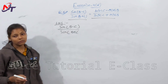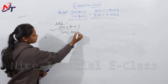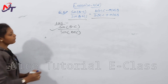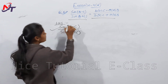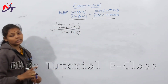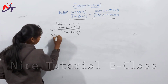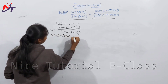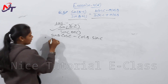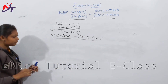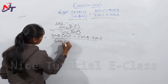We apply the sin(A − B) and sin(A + B) formulas. sin(B − C) = sinB cosC − cosB sinC, and sin(B + C) = sinB cosC + cosB sinC. So LHS = (sinB cosC − cosB sinC) / (sinB cosC + cosB sinC).